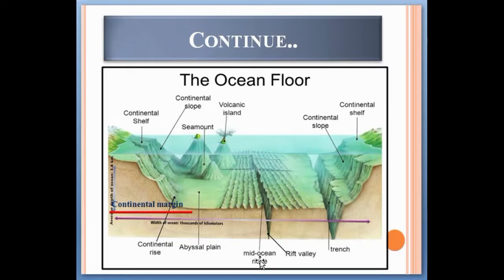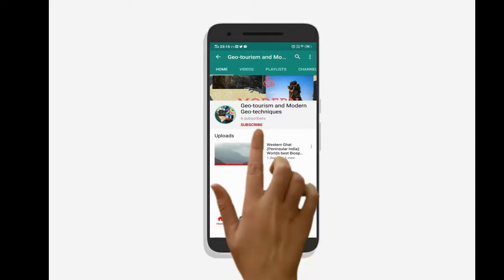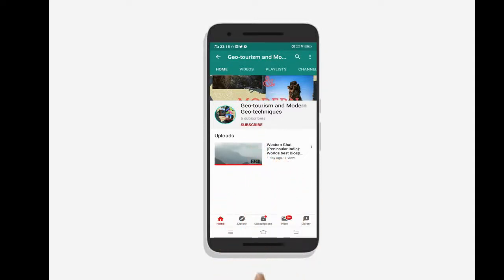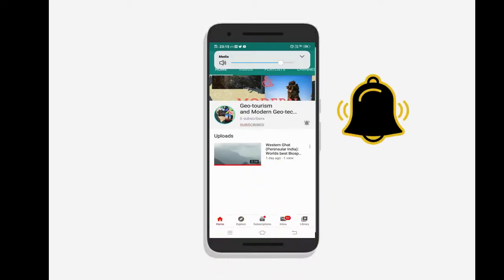To know more about how trenches, mid-oceanic ridges, rift valleys, continental shelves, and continental slopes are formed, see the previous video on plate tectonics. Subscribe to the channel and press the bell icon for the latest updates on geotourism and modern geotechnics.